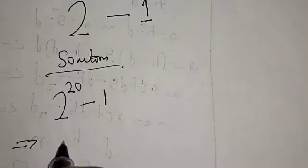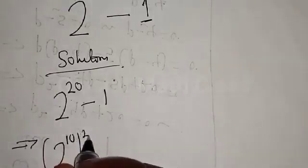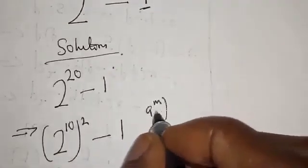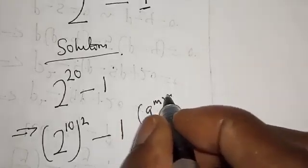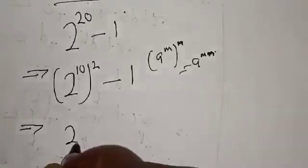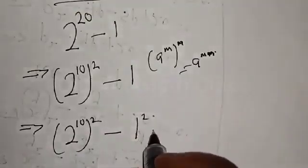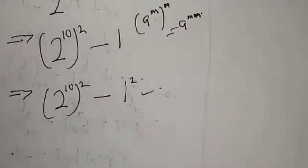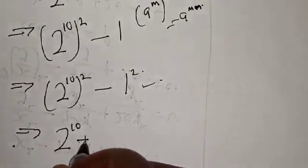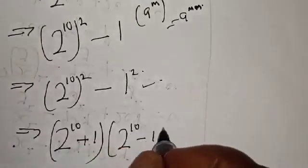2 raised to power 20 can be expressed as 2 raised to power 10, all squared, minus one. That is, using the rule that a to power m to power n equals a to power mn. This gives us 2 raised to power 10, squared, minus one, which is a difference of two squares. So this can be expressed as 2 raised to power 10 plus one, into 2 raised to power 10 minus one.